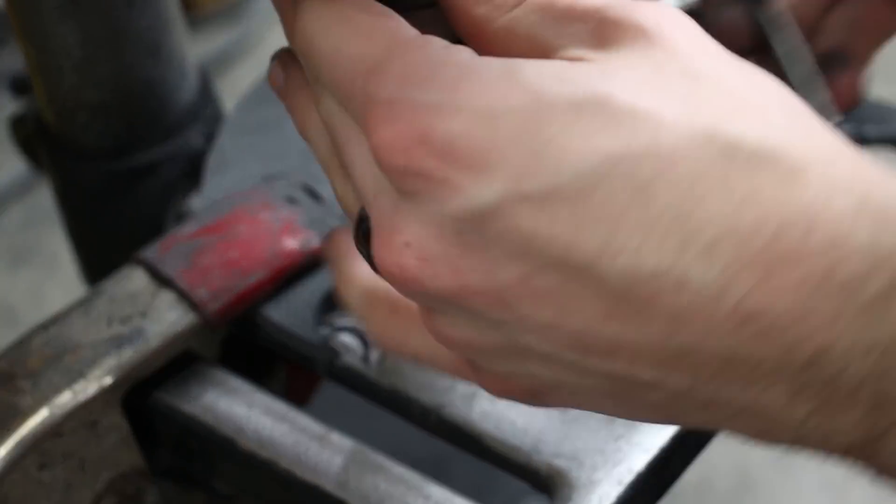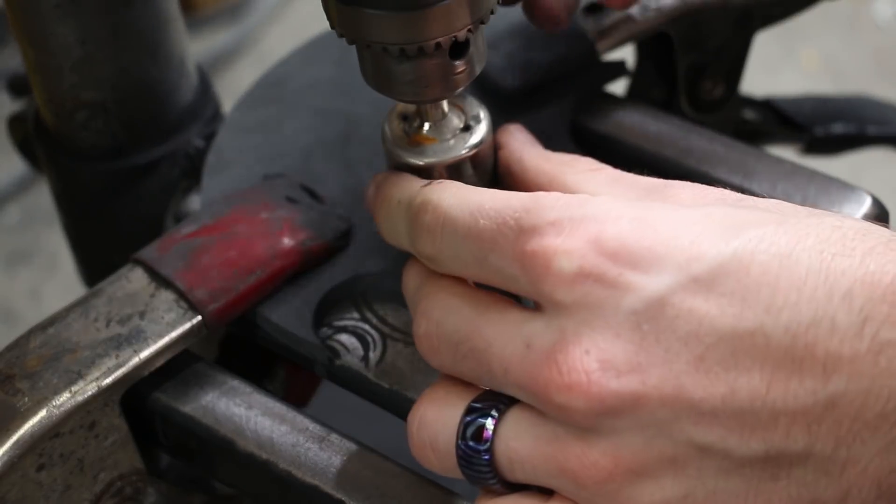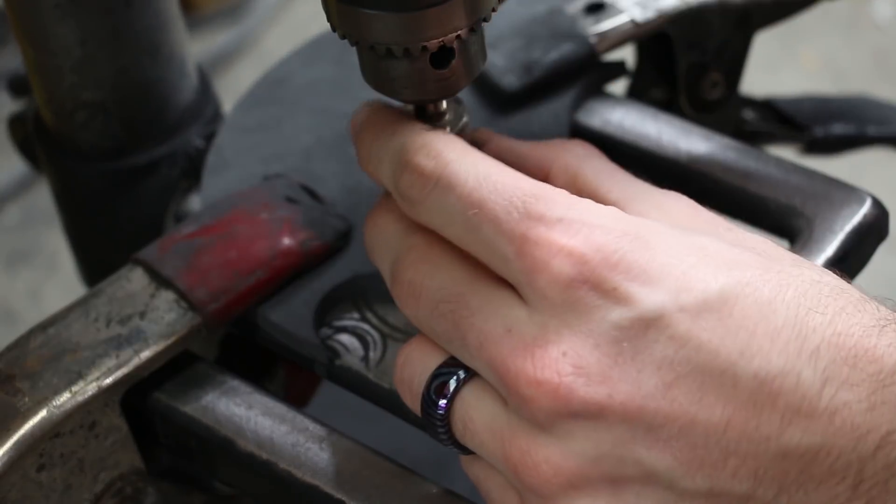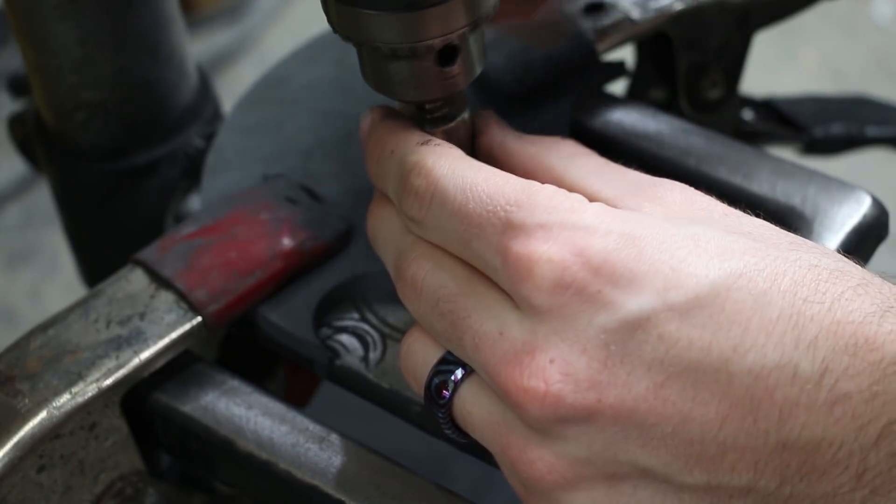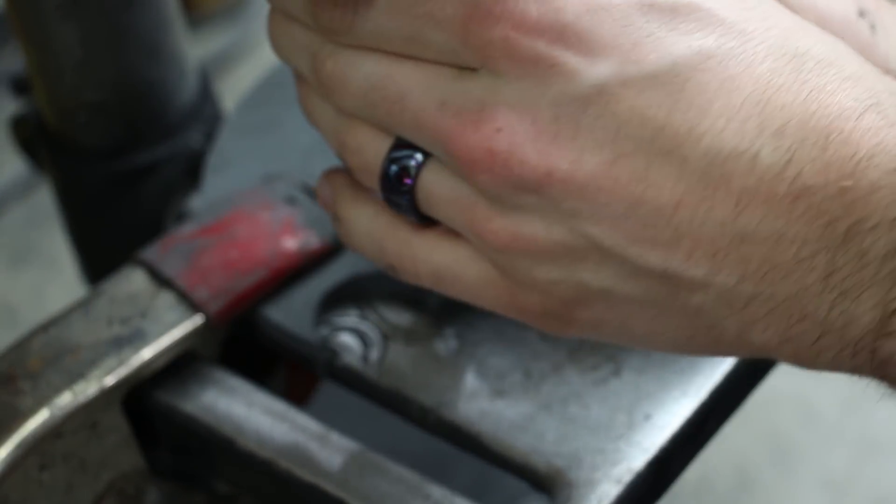Using calipers, I measured these diamond hole saws, making sure I had the right size for the ring I wanted to make. The process from there was pretty simple. I start with the smallest one and cut the smaller circle out of the carbon fiber.